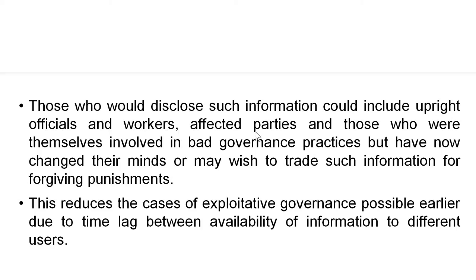Those who are going to disclose such information could include affected officials and workers, and affected parties — for example, a party who has been affected or cheated can disclose information related to the corrupted party. Also, those who were themselves involved in bad governance — this is very rare — for example, a politician or government employee involved in bad governance who now wants to disclose it, having changed their mind or wishing to trade such information for forgiven punishments.